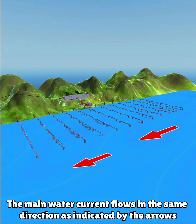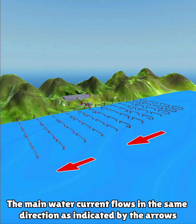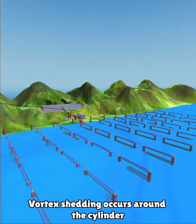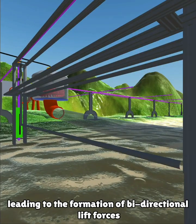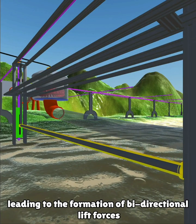The main water current flows in the same direction as indicated by the arrows. Vortex-shedding occurs around the cylinder, leading to the formation of bi-directional lift forces.